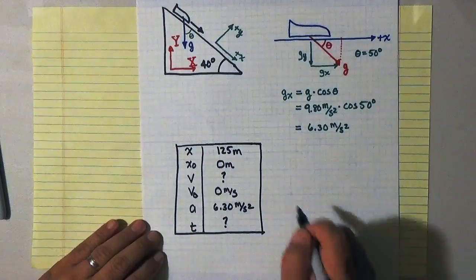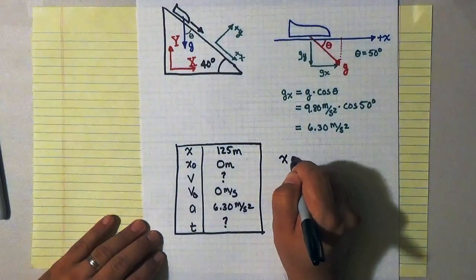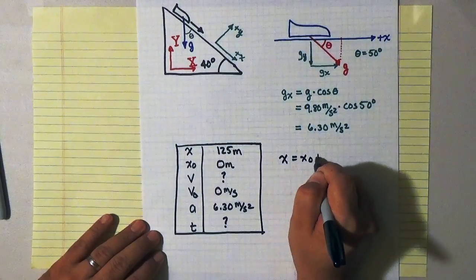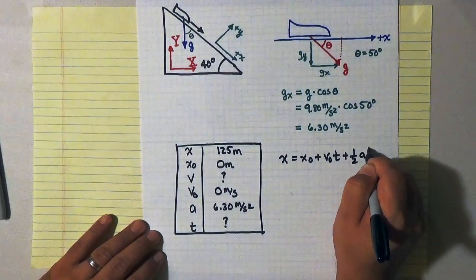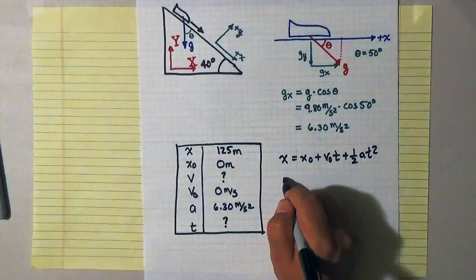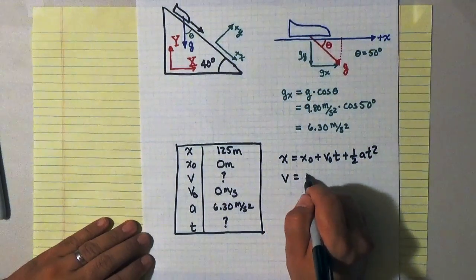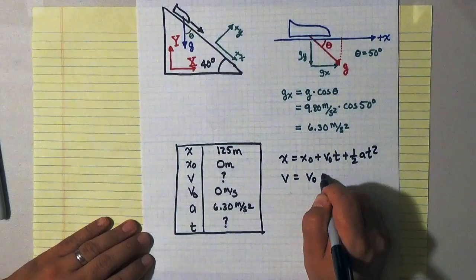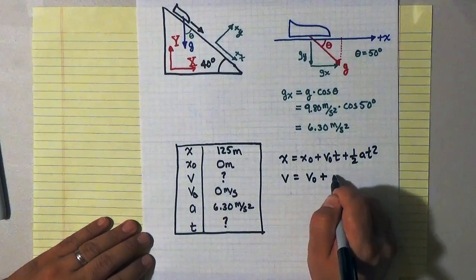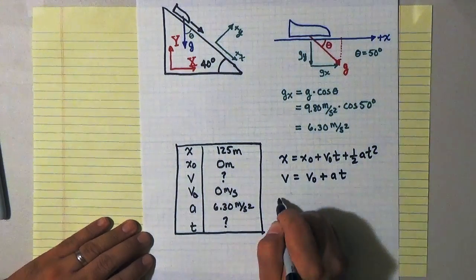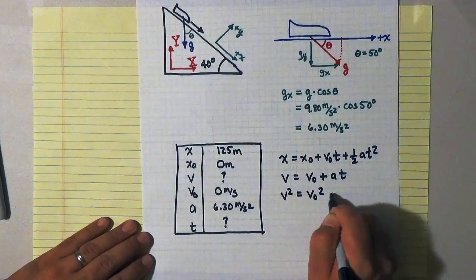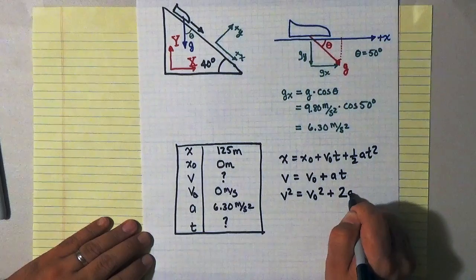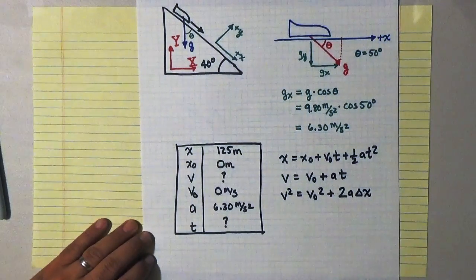So I'm going to write out my kinematic equations. There's x is equal to x_0 plus v_0 t plus a half at squared. v is equal to v_0 plus at. And v squared is equal to v_0 squared plus 2a delta x.